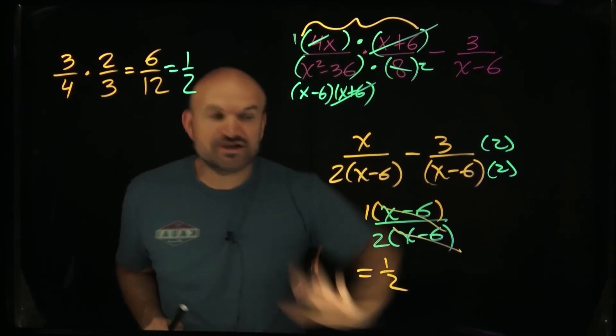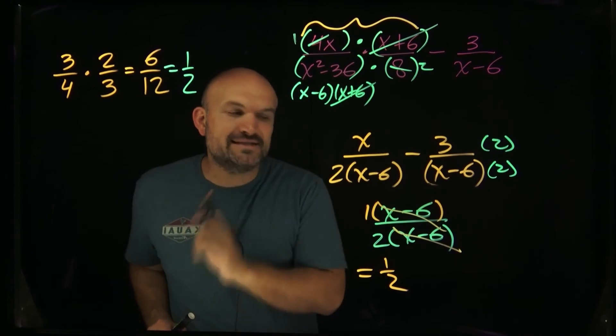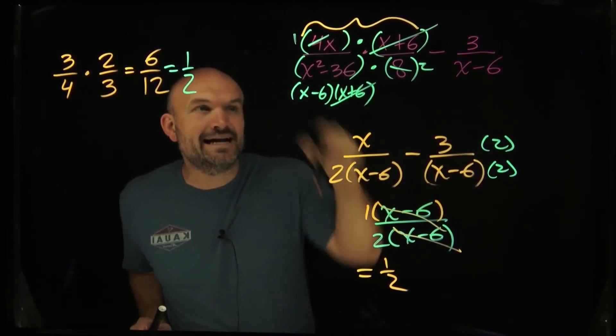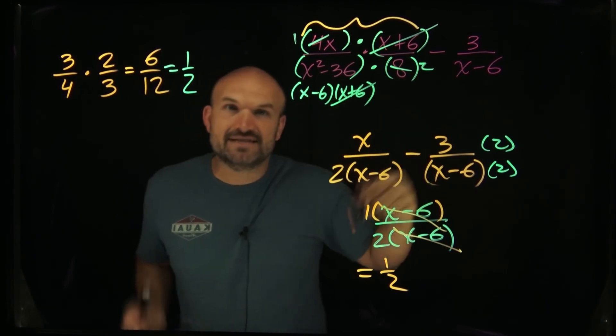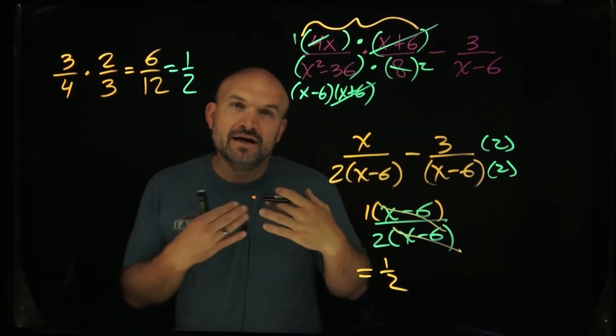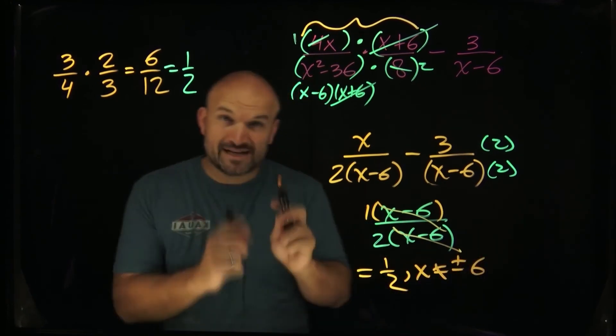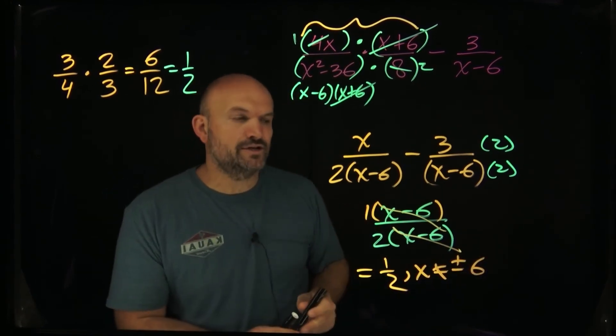Now, if we're going to include our excluded values, just because all the x's got simplified out, does not mean we don't have any more excluded values. Our excluded values are still going to be x cannot equal 6 or negative 6 because those would make my denominator 0 from my original equation.